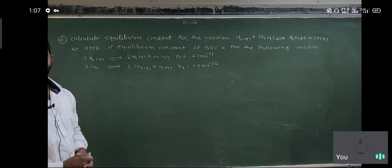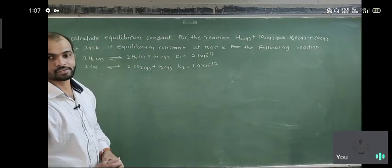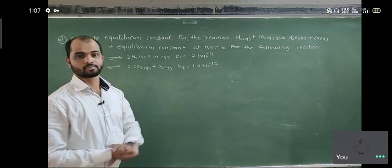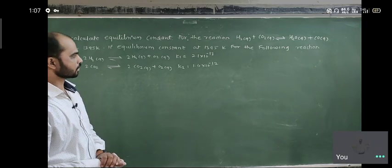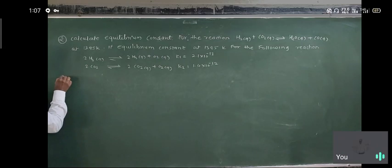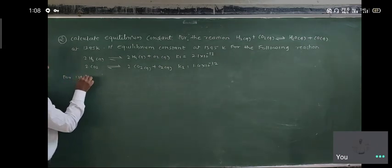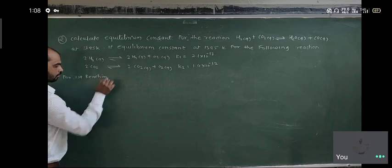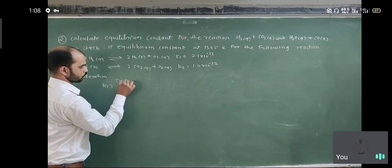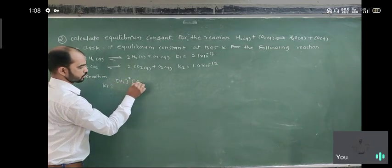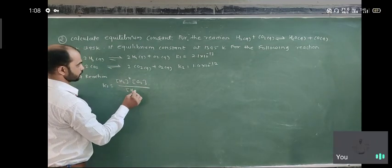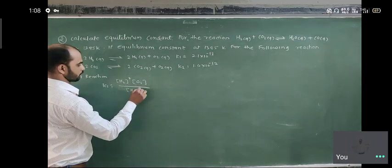Two reactions are given with equilibrium constants K1 and K2. Using K1 and K2, we can find the equilibrium constant for the given reaction. We write the equilibrium constant equation for the first reaction: K1 is equal to concentration of H₂O squared times concentration of O₂ upon concentration of H₂ squared.